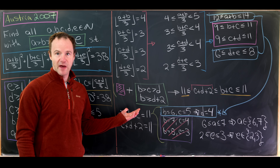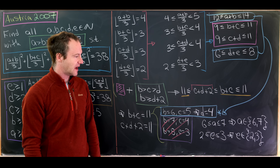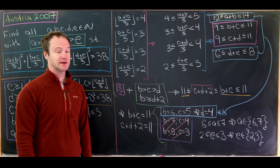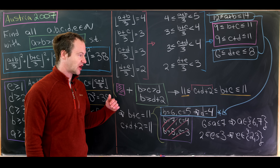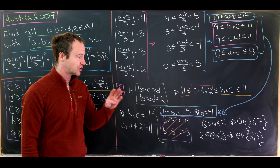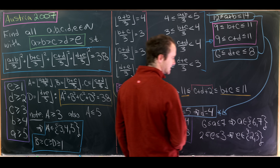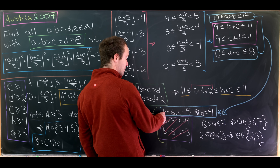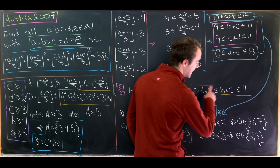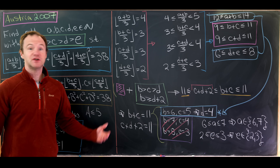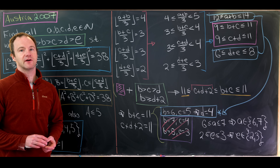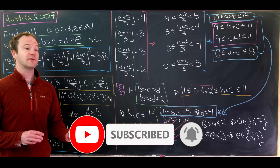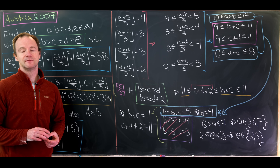Every remaining combination works, giving four total solutions. We choose one value from {6, 7} for A, we're forced to have B=6, C=5, D=4, and we choose one value from {2, 3} for E. Thanks for sticking around — if you haven't subscribed yet, consider hitting that subscribe button, and you can also join our Patreon via the link in the description.